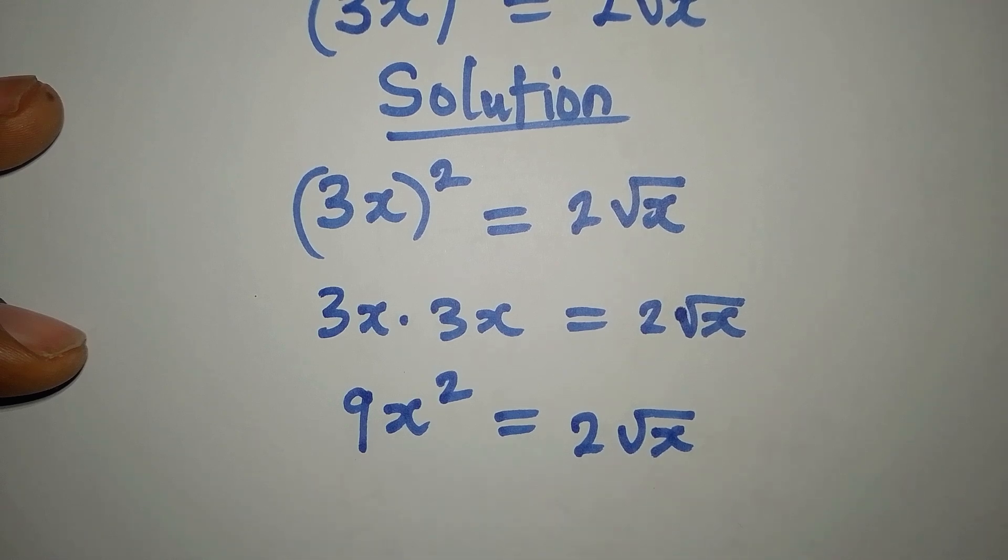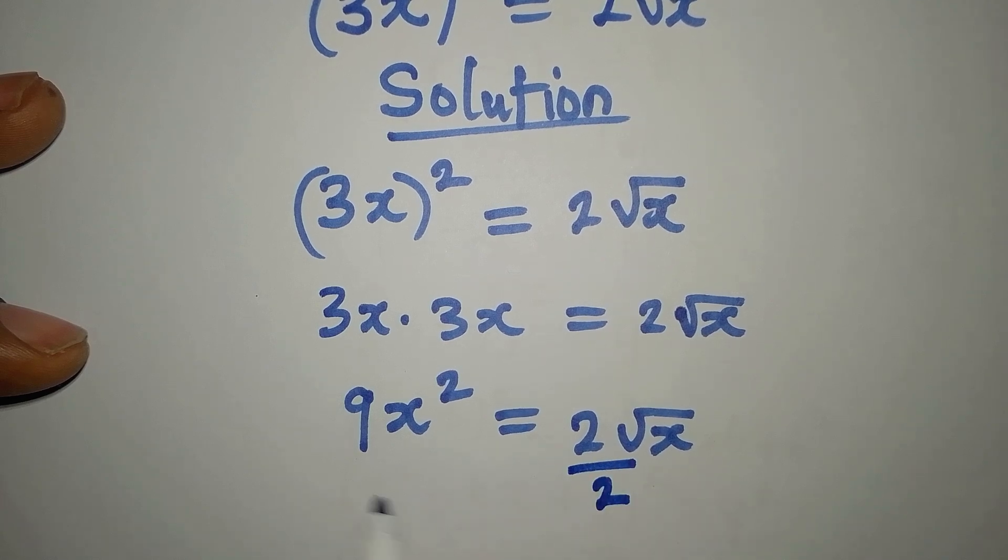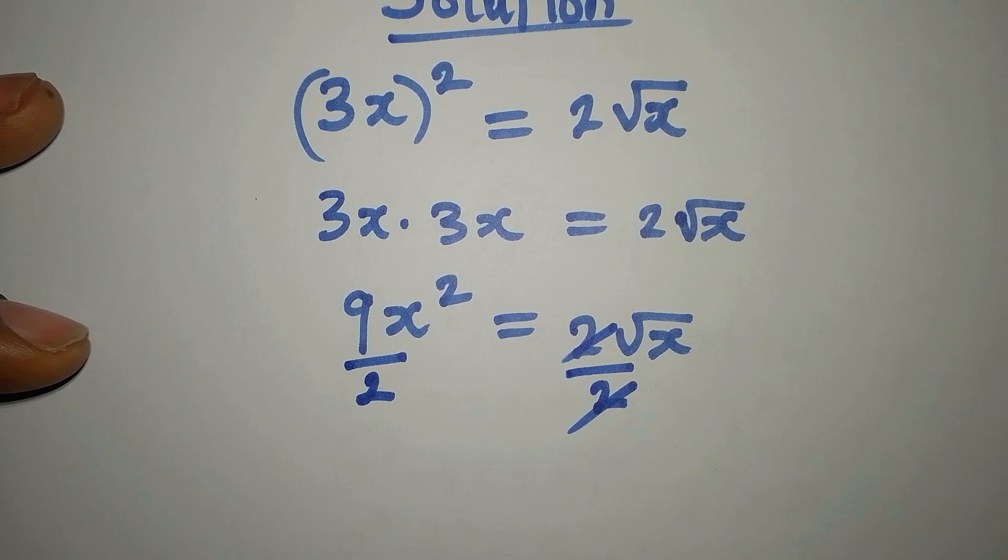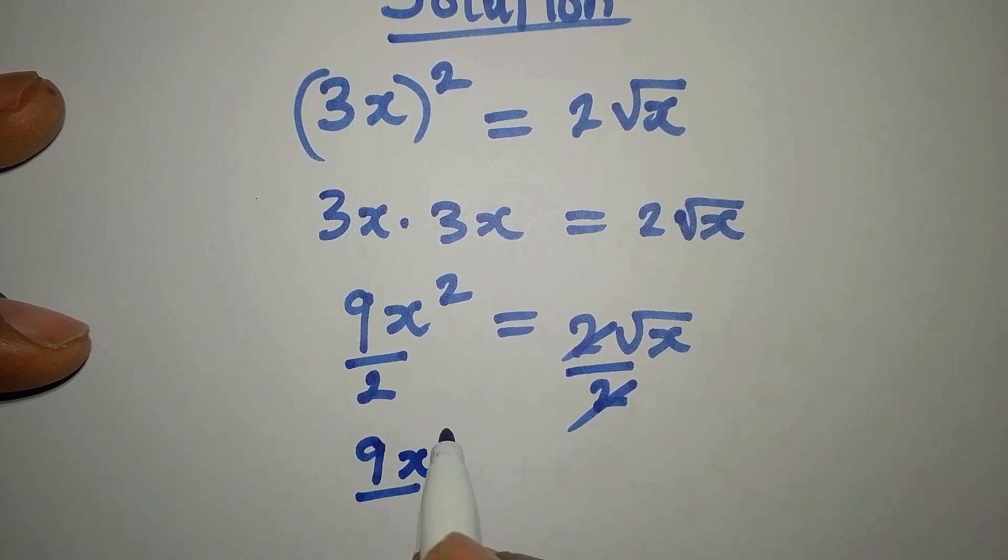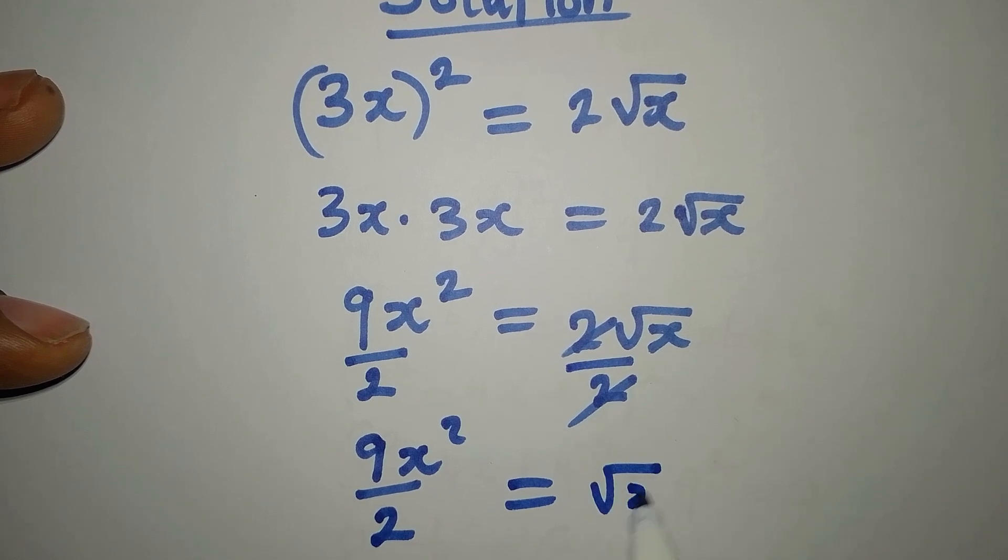So why don't we rearrange this? First divide this by 2, divide this by 2, this goes away from here. So we have 9x²/2 equals square root of x.